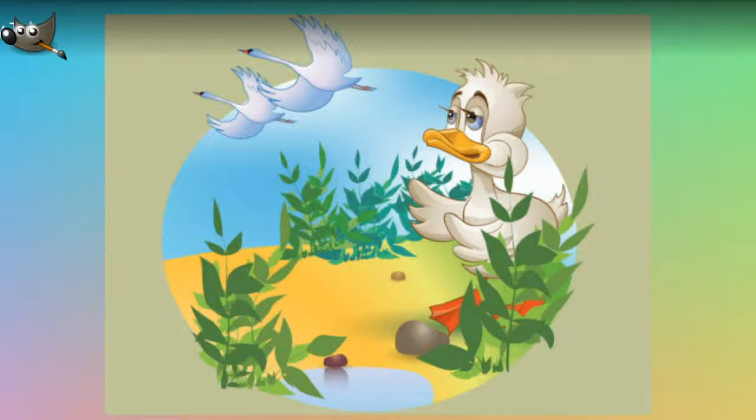In the morning the strange duckling was at once noticed, and the cat began to purr and the hen to cluck. "What's this?" said the woman and looked all round, but she could not see well and therefore she thought the duckling was a fat duck that had strayed. "This is a rare prize," she said. "Now I shall have duck's eggs. I hope it is not a drake. We must try that."